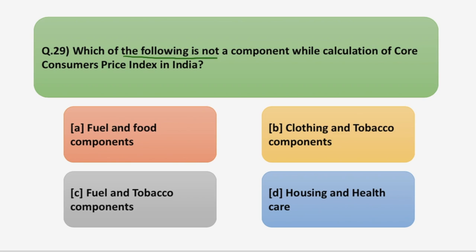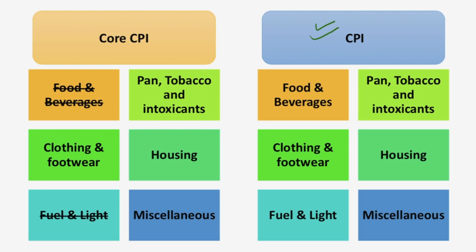The next question says: which of the following is not a component in the calculation of core Consumer Price Index in India? Four options are given. CPI has six components in India: food and beverages, tobacco and intoxicants, clothing and footwear, housing, fuel and light, and miscellaneous. The miscellaneous component includes household goods and services, health, education, transport and communication, personal care and effects, and recreation and amusement.